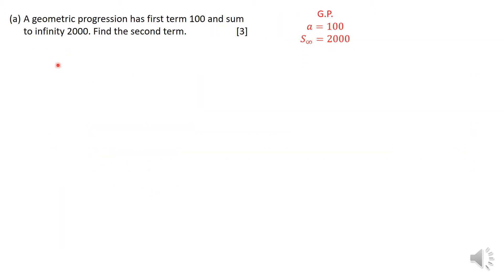The very first one is a geometric progression. The first term is 100 and the sum to infinity is 2000. I like to write down the information that I am given. The formula for sum to infinity is A over 1 minus R.